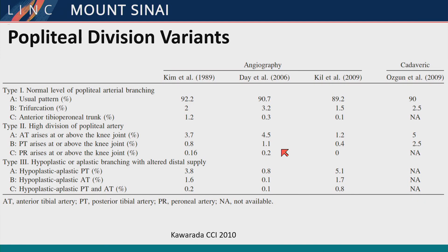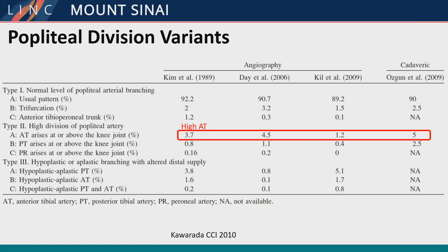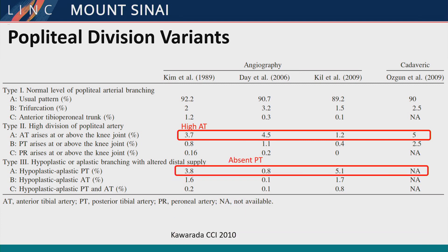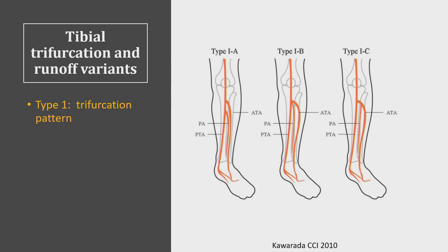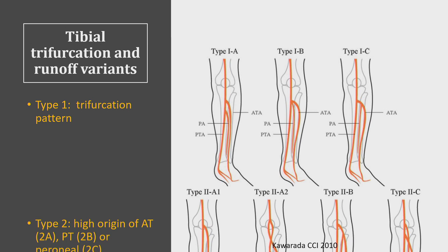The popliteal division has multiple alterations in potential normal anatomy. The most common are high origin of the anterior tibial artery and an absent or hypoplastic posterior tibial artery, which often is collateralized by the peroneal. Carerata has very nicely categorized these in an article from CCI in 2010 defining trifurcation patterns. Type I covers whether it's a true trifurcation, an anterior tibial artery coming off first with a bifurcation, a peroneal coming first, or a posterior tibial artery coming first.